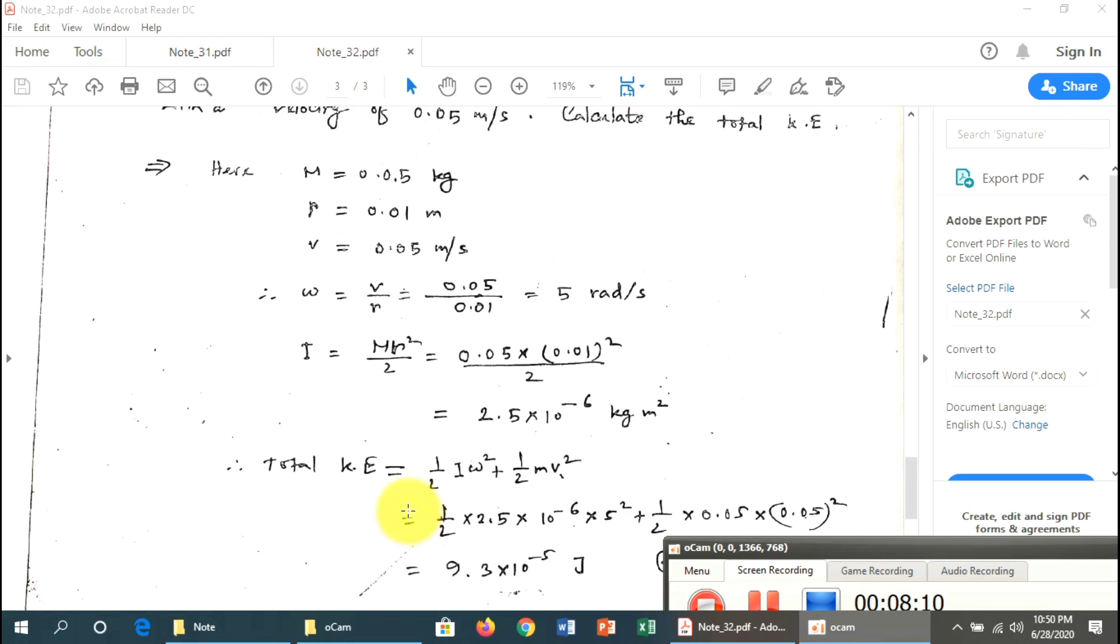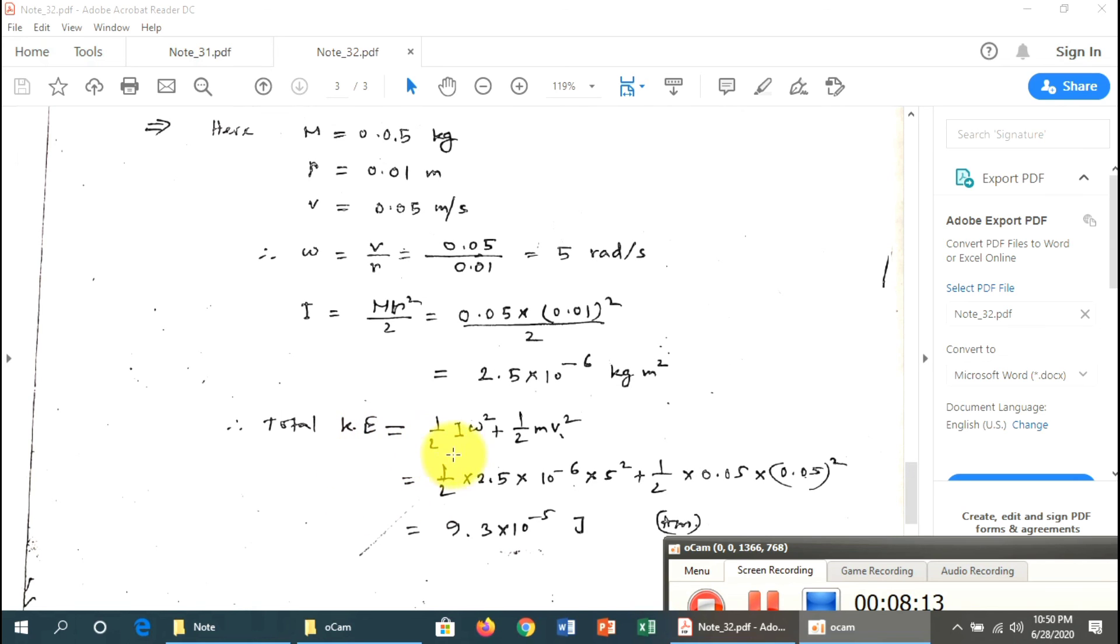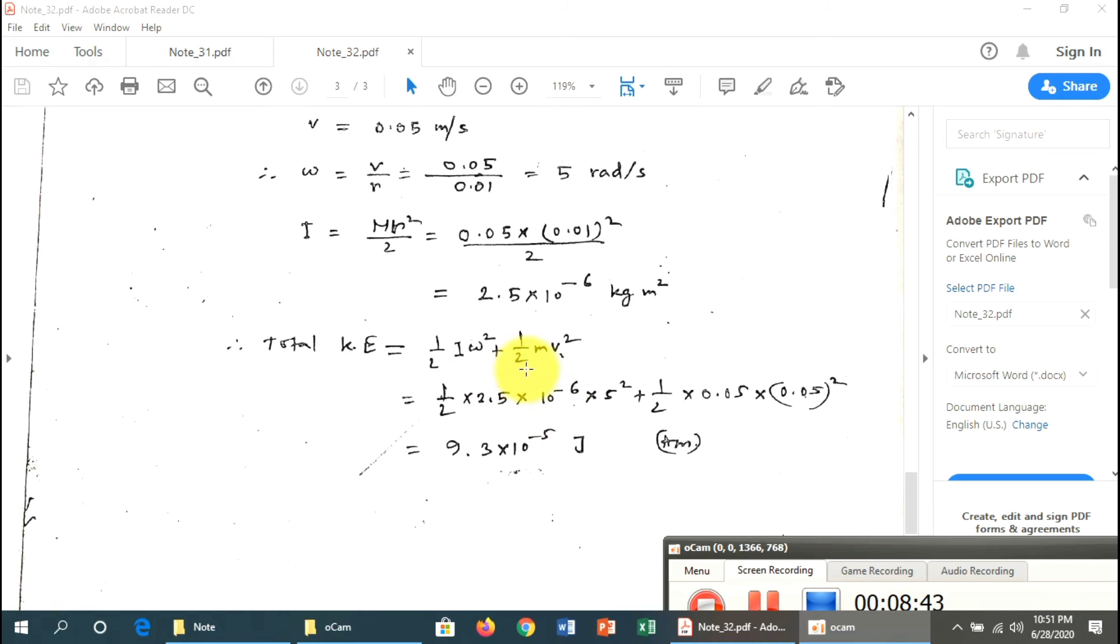The total kinetic energy equals translational kinetic energy plus rotational kinetic energy: KE_total = ½mv² + ½Iω² = ½mv² + ¼mv² = ¾mv². Calculating: KE_total = 9.3 × 10^-5 joules.